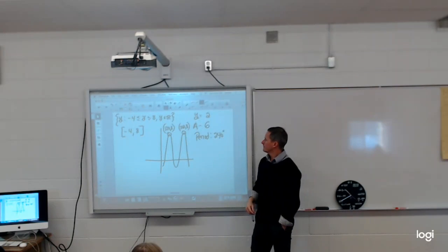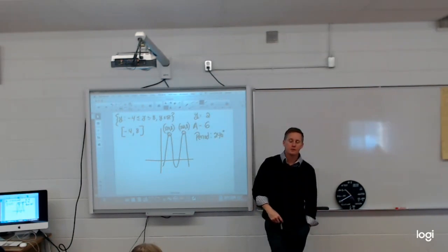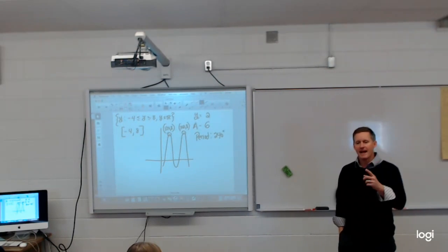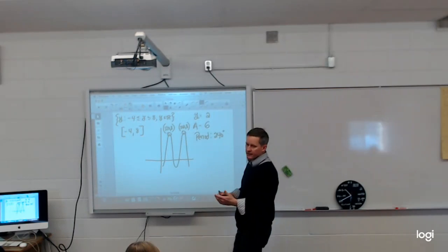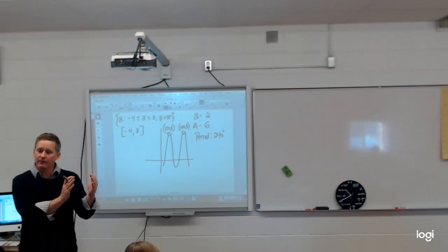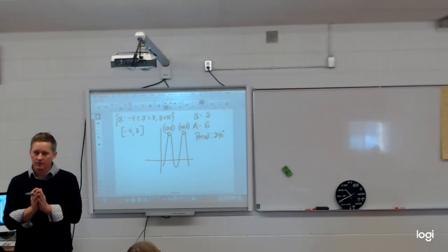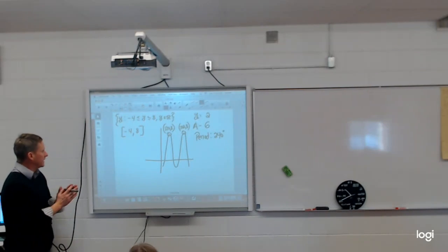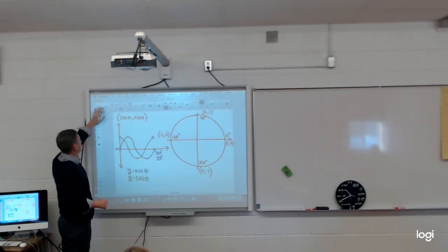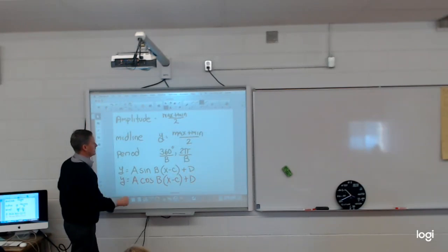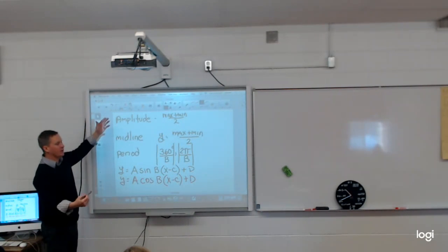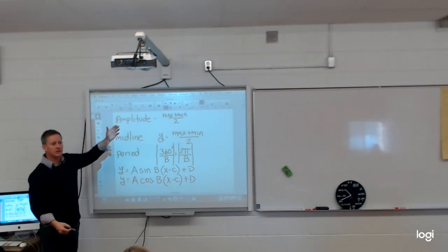Your period can't be negative — it's an absolute value; it's a distance. But you can use negative numbers to arrive at your period. The period should always be expressed as an absolute value, meaning it's always going to be positive.